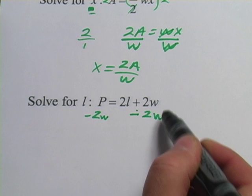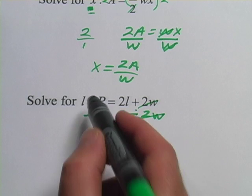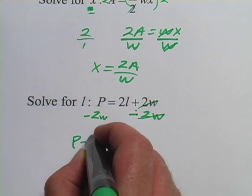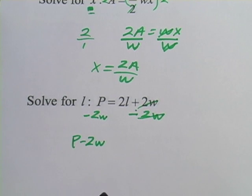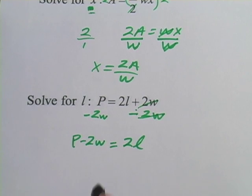Over here, a 2W minus a 2W comes out to 0, so it's like they cancel out. And over here, P minus 2W, we just write like that. And on this side, what we have left is 2L.